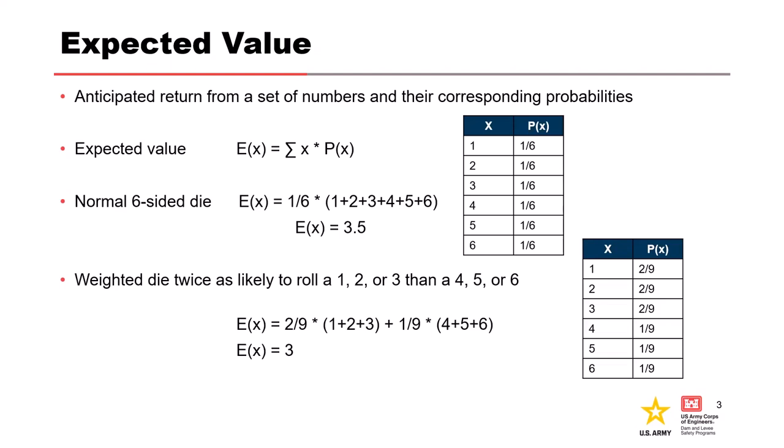On the side we have two examples. The first is a normal dice where everything's equally weighted. The probability of getting one, two, three, four, five, or six are all the same. Each side has the same probability of being rolled. The expected value of a fair die is the sum of one to six divided by six sides, which actually calculates out to 3.5.